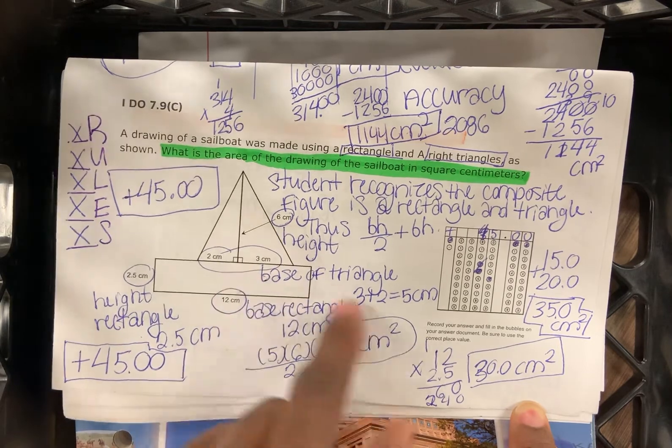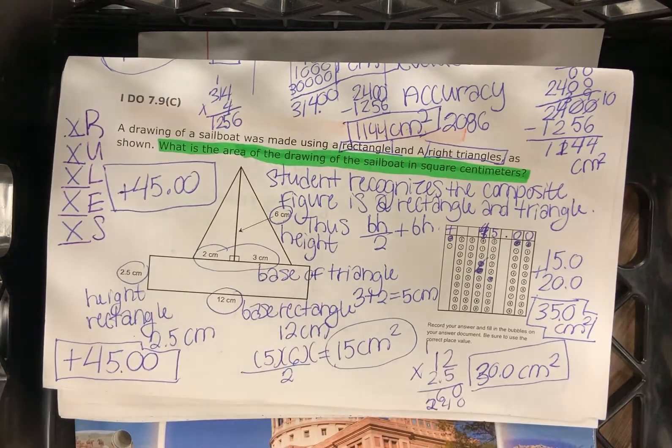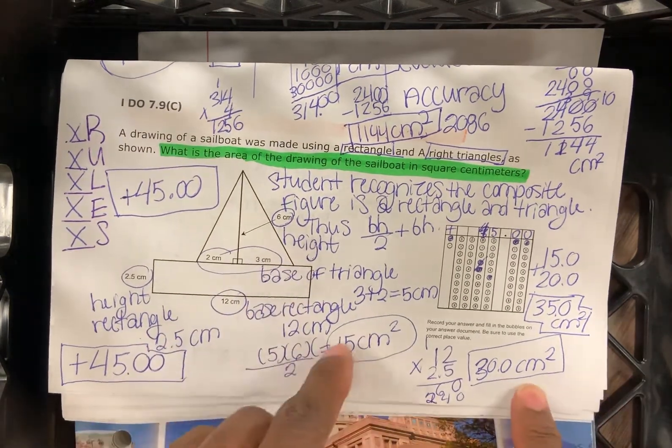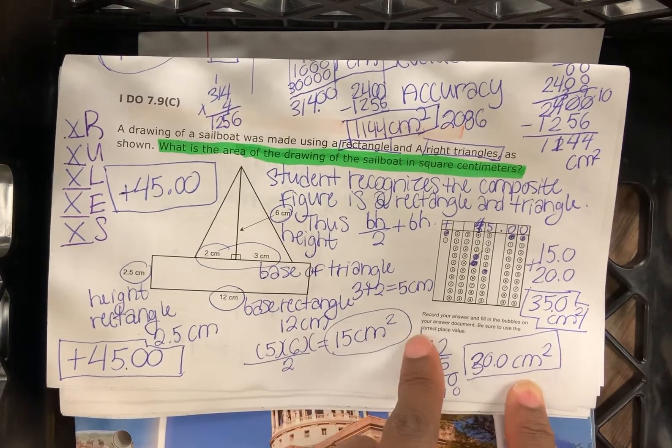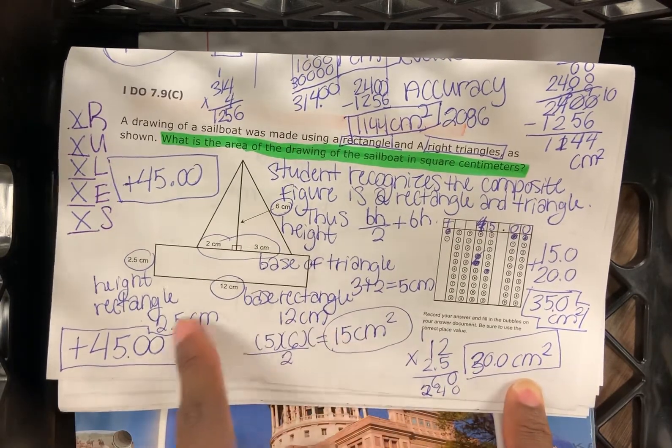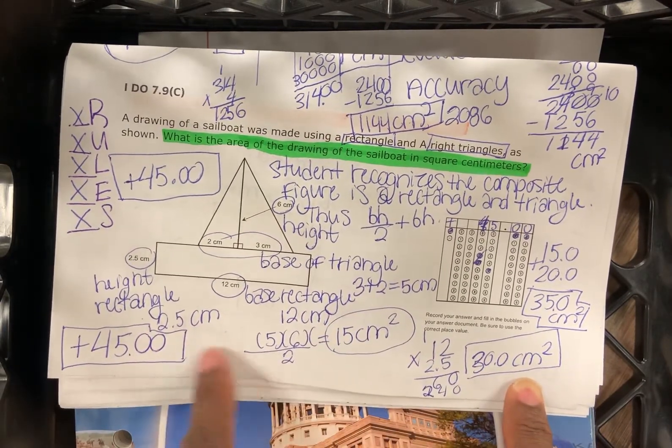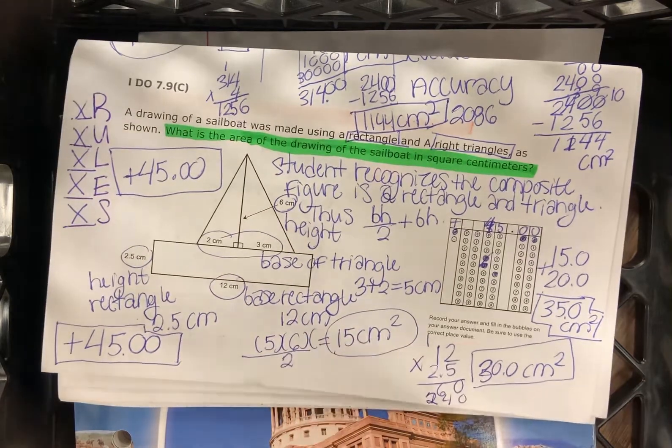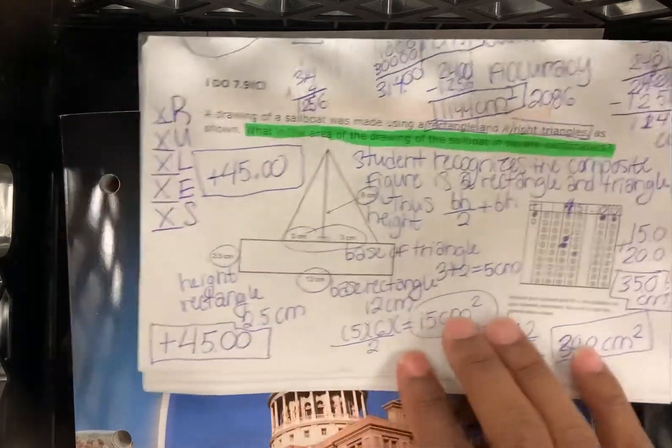So the area of the rectangle being 30 centimeters and the area of the triangle being 15 centimeters squared. They're both going to be squared. We combine those together and we're going to get 45. It's going to be in centimeters squared. So 45 centimeters squared, let me write that in here.